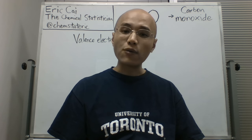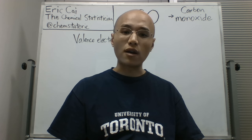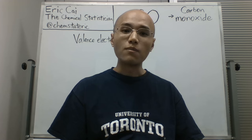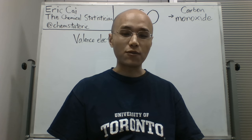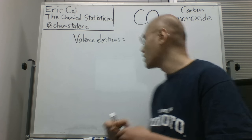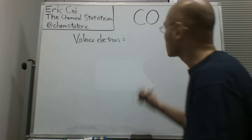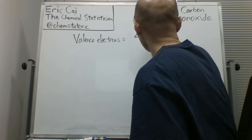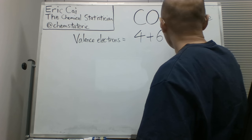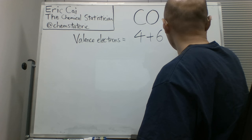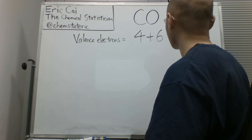As always, we need to count the number of valence electrons in the constituent atoms before we draw the Lewis dot structure. So let's do that first. We know that carbon has four valence electrons, and oxygen has six valence electrons. So the number of valence electrons that we need to account for in the Lewis structure is 10.